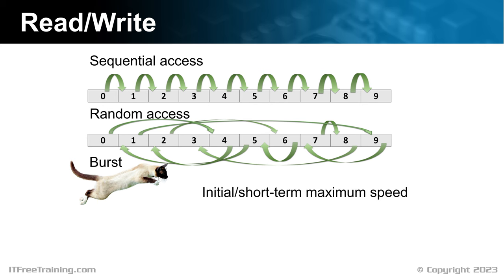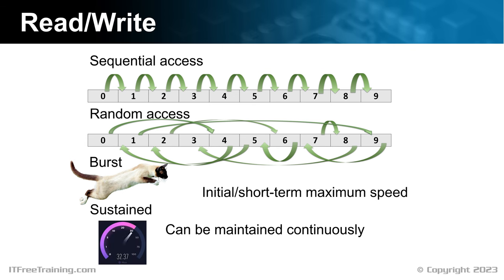Often, when looking at the specifications for solid state drives, they will list the speed. However, this does not give you an indication of how fast it will run when under load for a period of time. To get an understanding of how fast the storage device will operate, look for specifications that give an indication of how the storage will perform under load. This may be referred to as sustained — the performance a storage device can maintain when put under constant load.